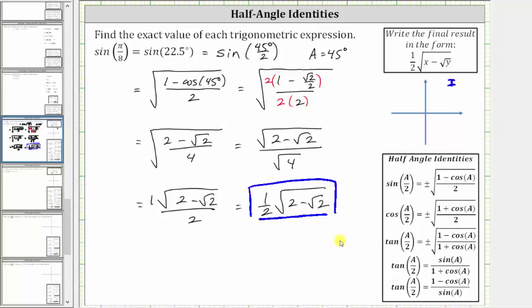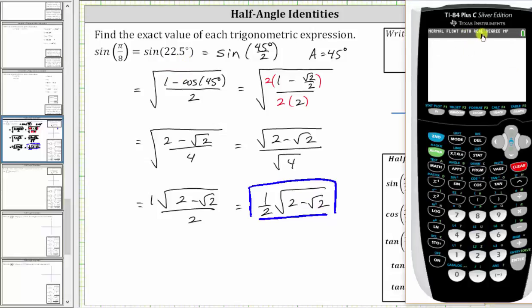Before we go though, let's check this on the calculator. Let's compare the decimal approximation for the sine of 22.5 degrees and the decimal approximation for this exact value. The calculator's already in degree mode, so I will enter sine 22.5, close parenthesis, enter.